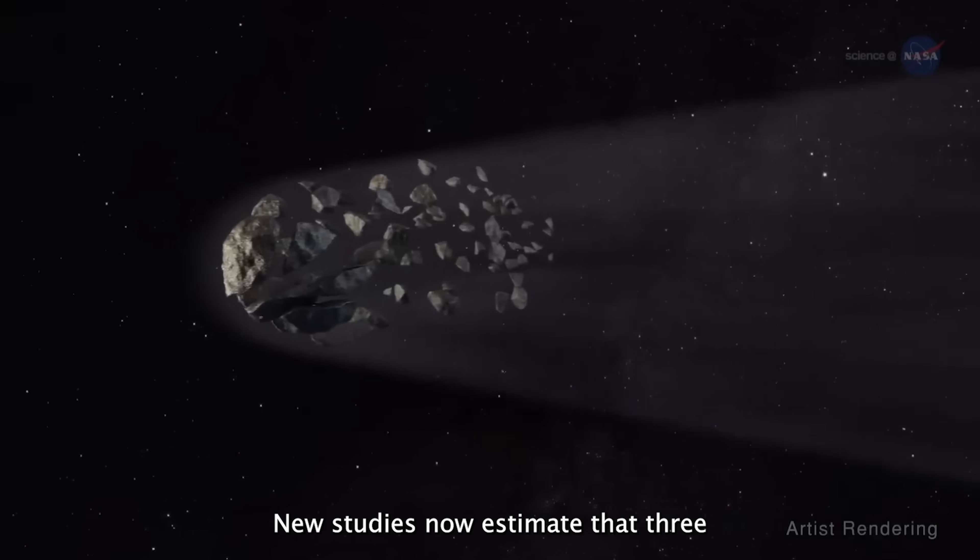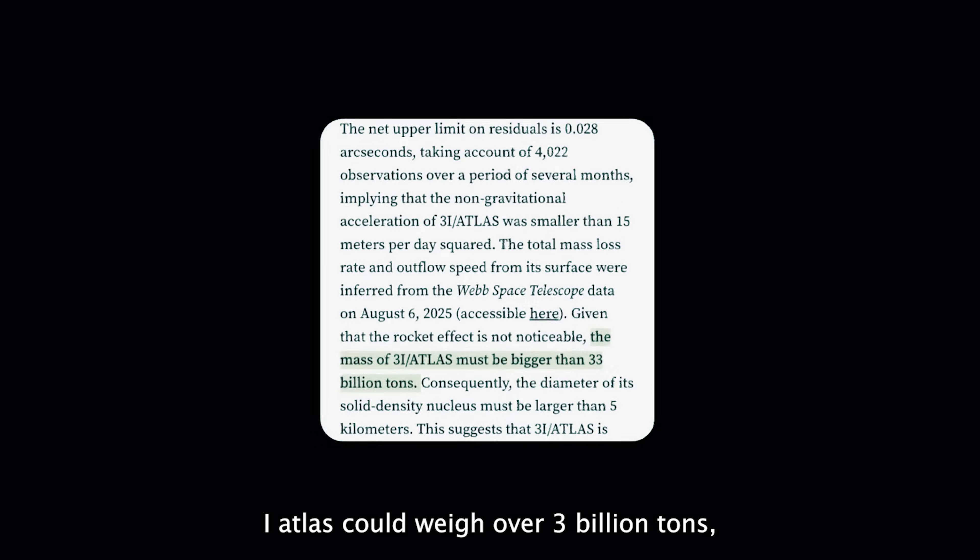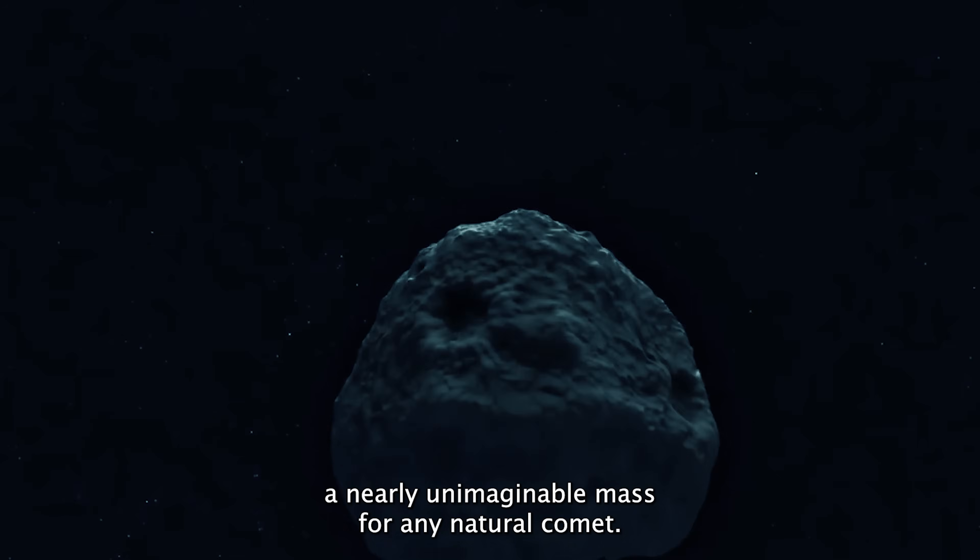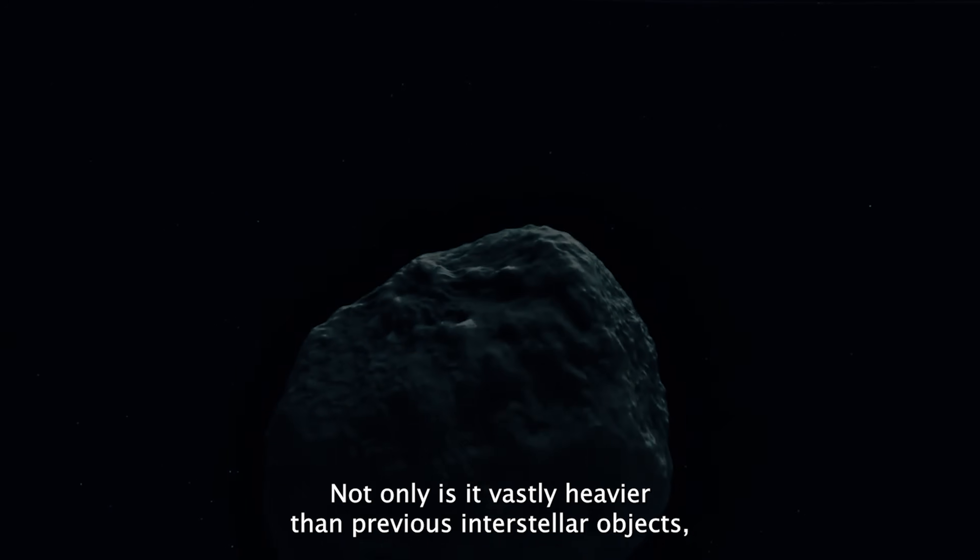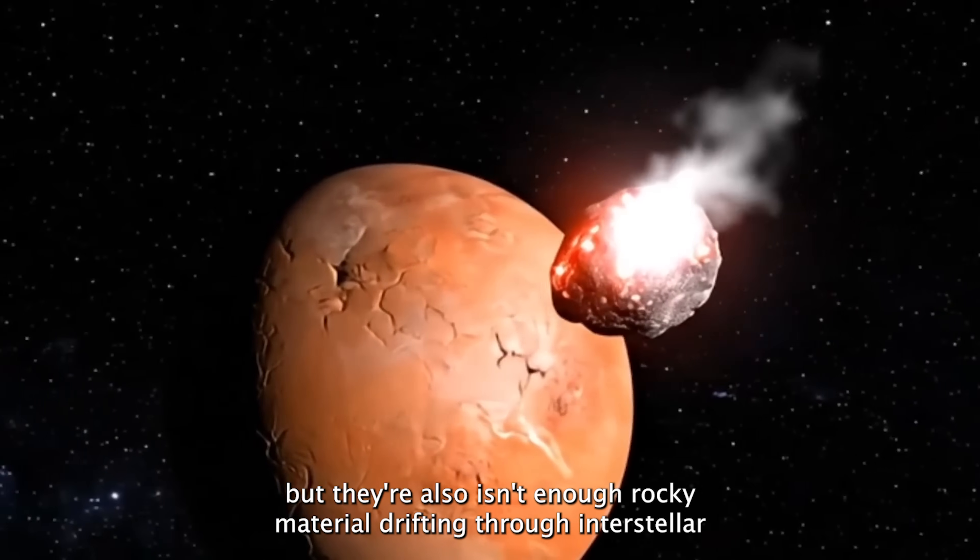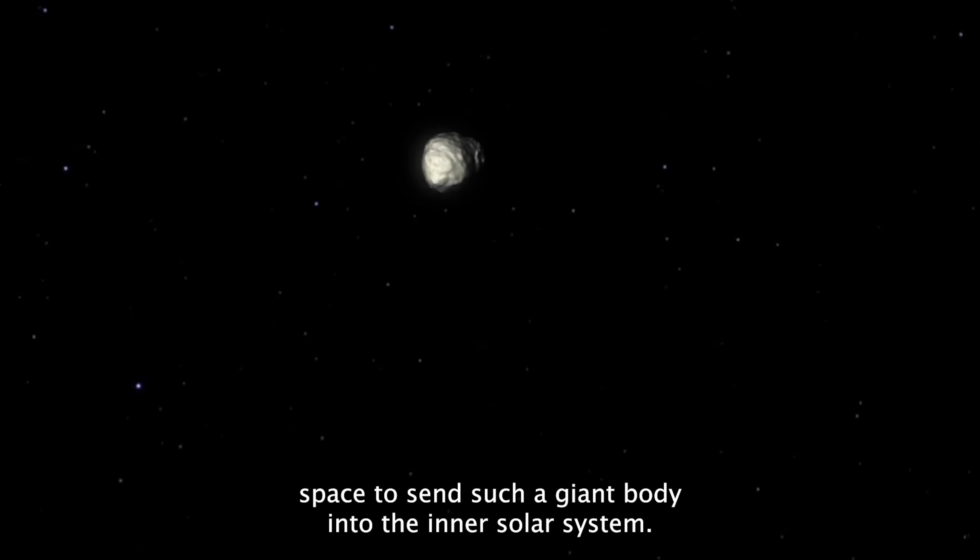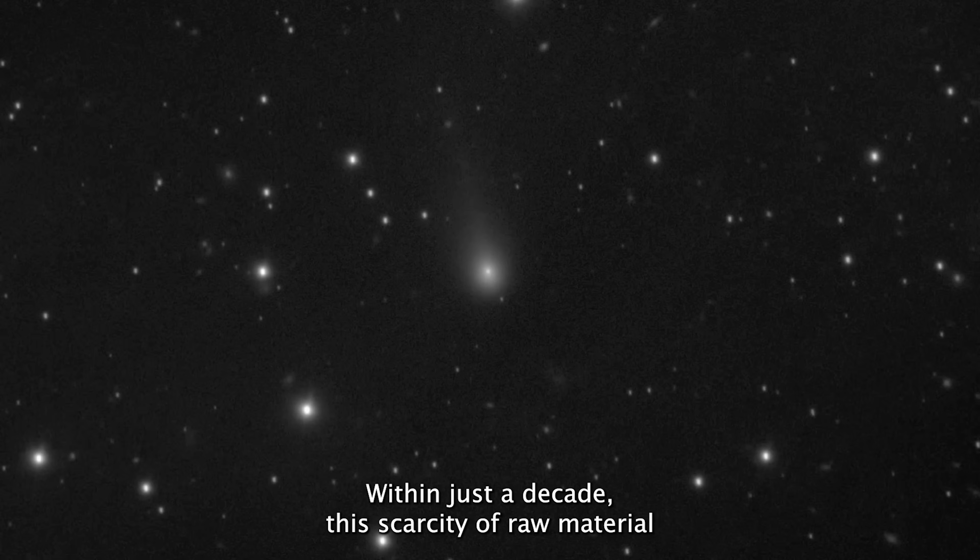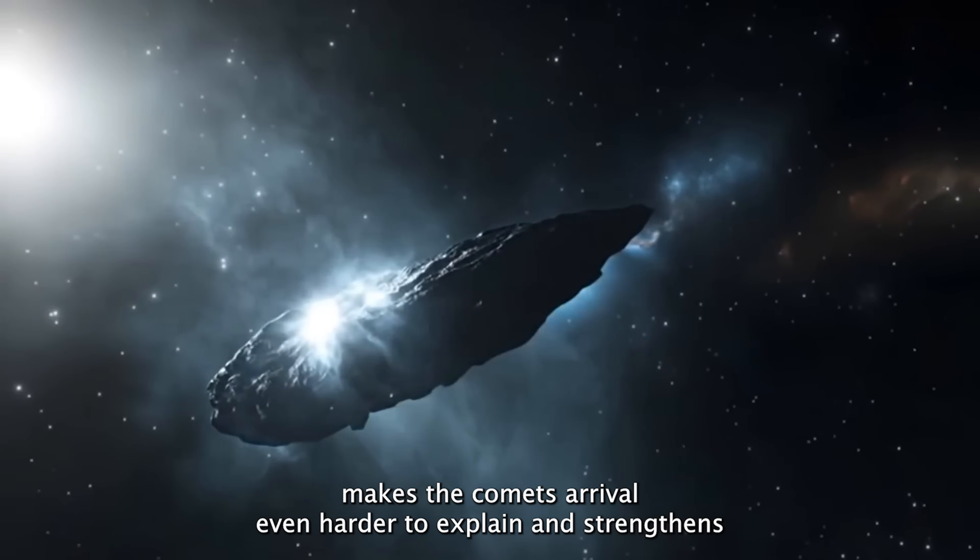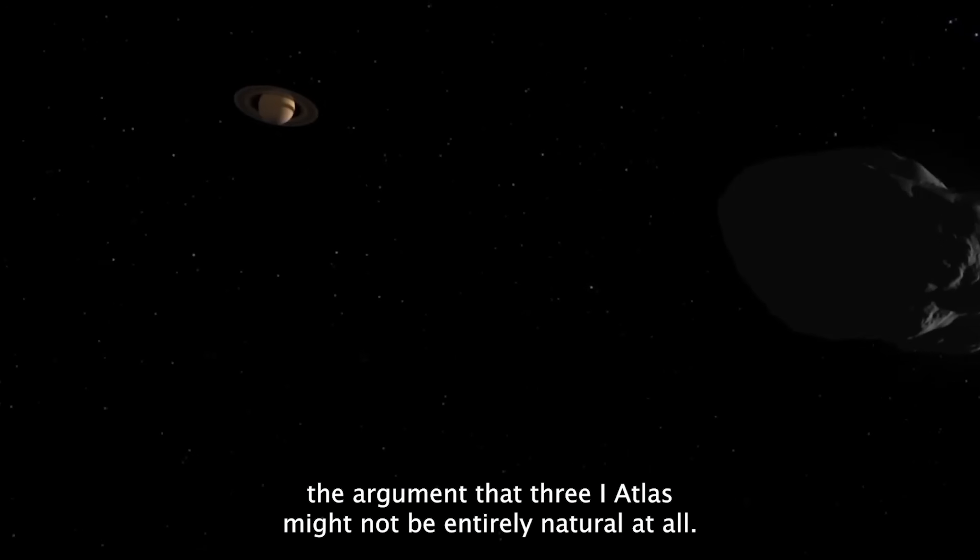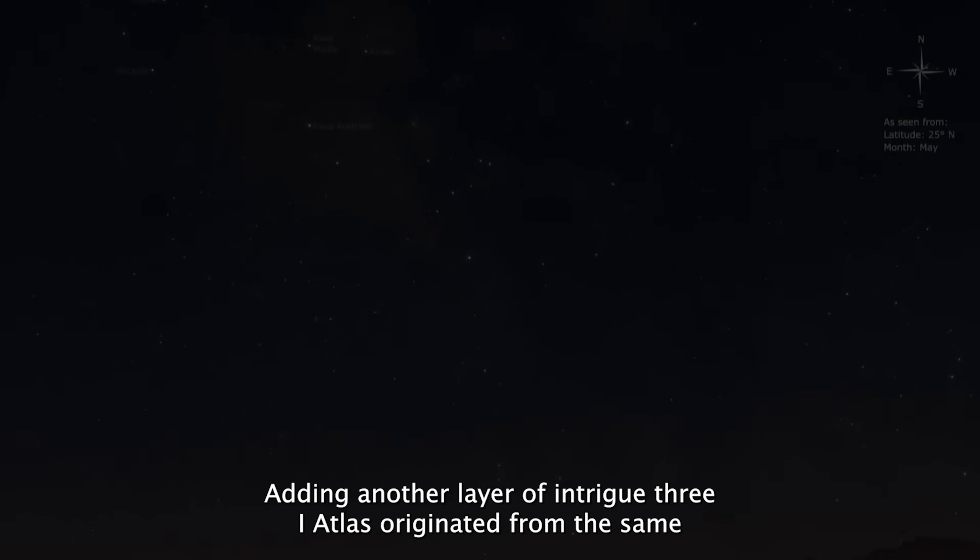New studies now estimate that 3i Atlas could weigh over 33 billion tons, a nearly unimaginable mass for any natural comet. Not only is it vastly heavier than previous interstellar objects, but there also isn't enough rocky material drifting through interstellar space to send such a giant body into the inner solar system within just a decade. This scarcity of raw material makes the comet's arrival even harder to explain and strengthens the argument that 3i Atlas might not be entirely natural at all.